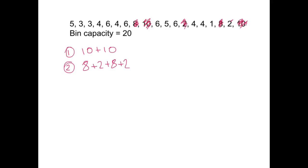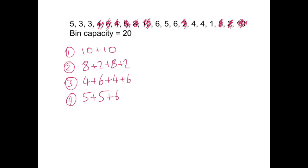Crossing them off again, I can see for a third bin there's a 4 and a 6, and a 4 and a 6 — crossing those off, just looking each time for things that make up to 20. And I could have a fourth bin with a 5 and a 5 and a 6 and a 4.